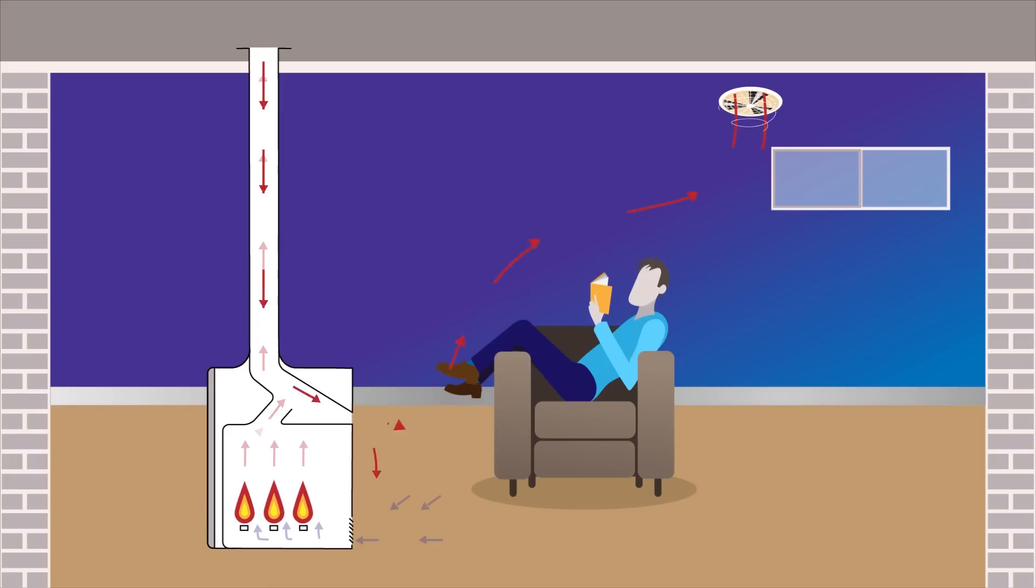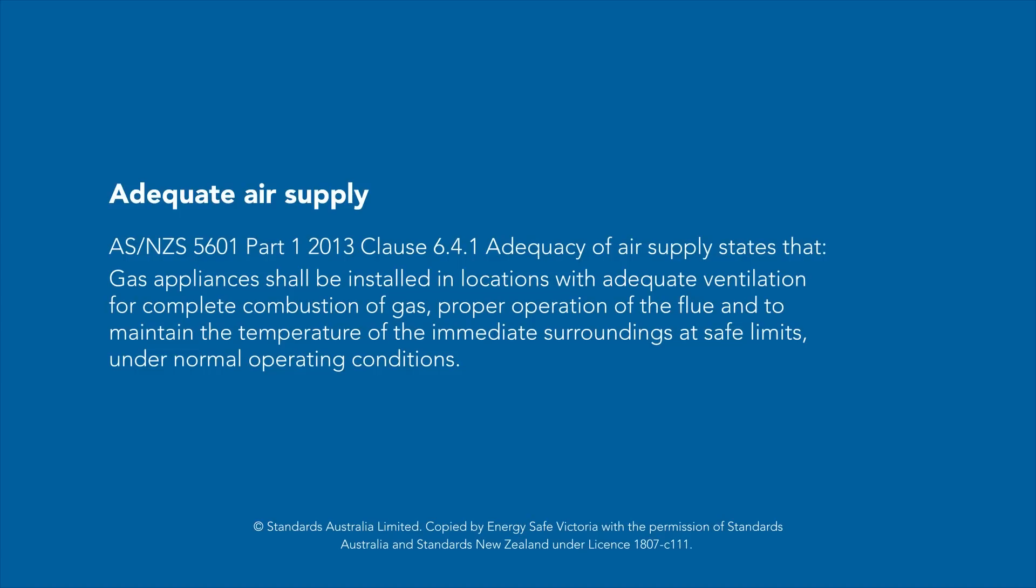This video explains what negative pressure is and its effect on gas appliances. AS NZS 5601 Part 1 2013 Clause 6.4.1 Adequacy of air supply states that gas appliances shall be installed in locations with adequate ventilation for complete combustion of gas, proper operation of the flue, and to maintain the temperature of the immediate surroundings at safe limits under normal operating conditions.